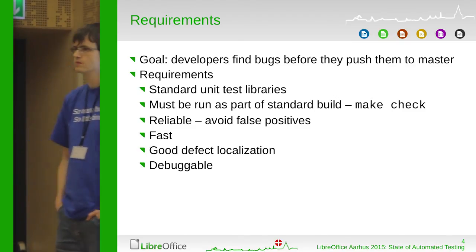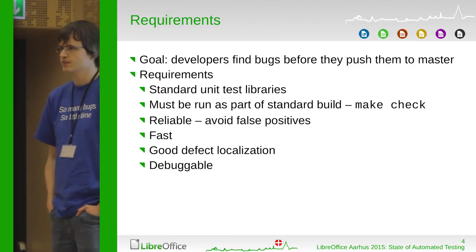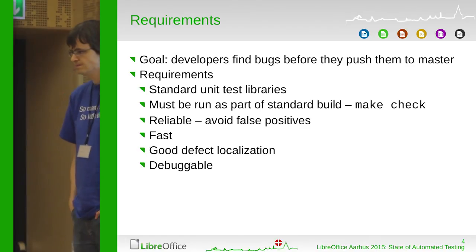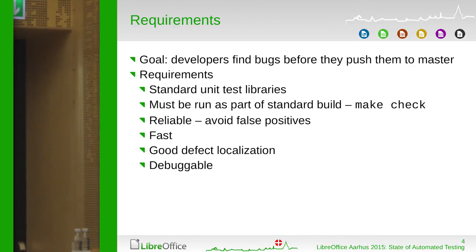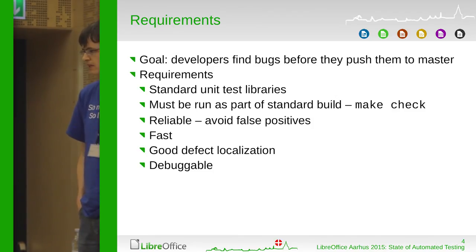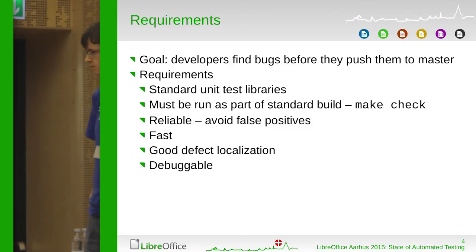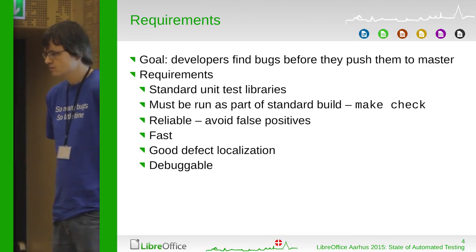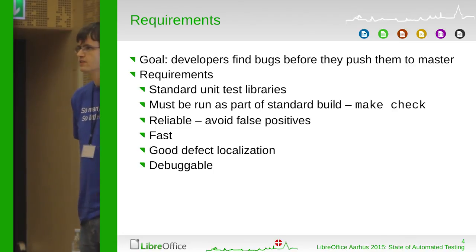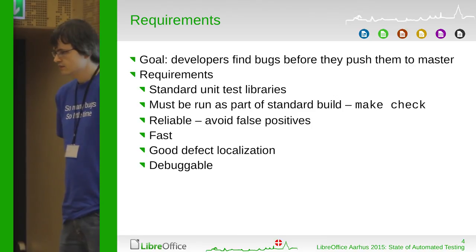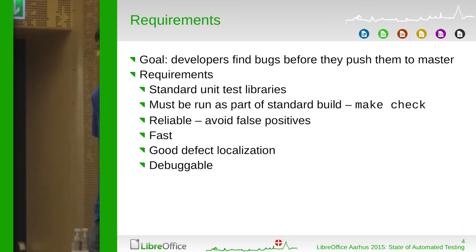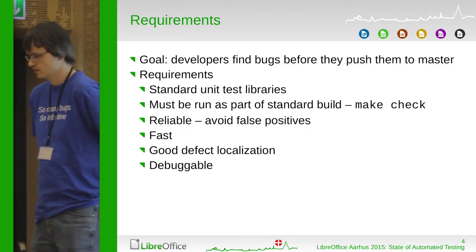The next requirement is that we want good defect localization from test failures. If a test fails, it should be relatively obvious what exactly has failed, where in the LibreOffice code the problem is, and where to look to debug effectively. The last requirement is that tests should be debuggable — it should be easy to run a test inside a debugger so the developer can easily investigate and find out what problem was introduced.